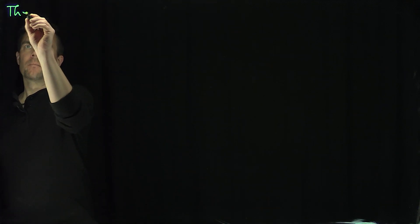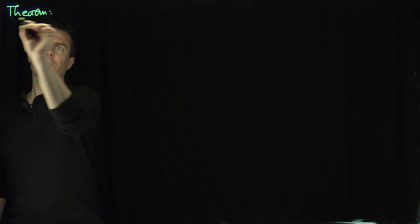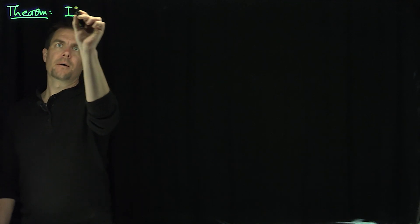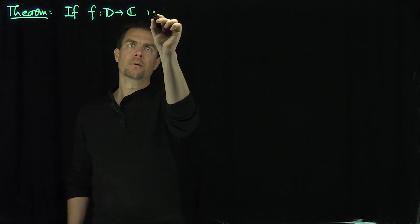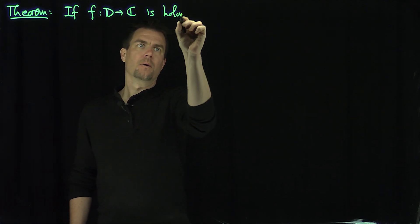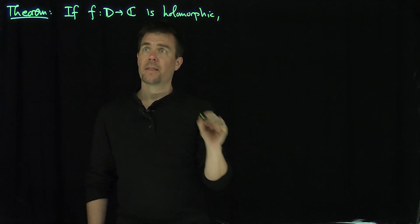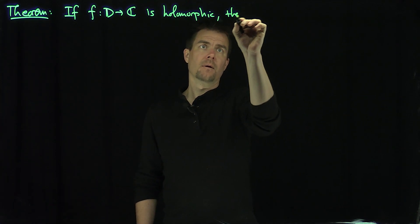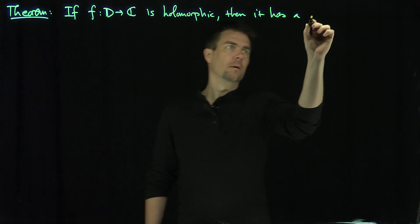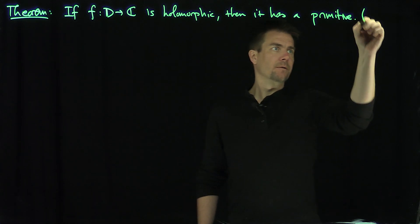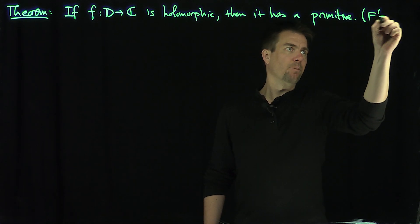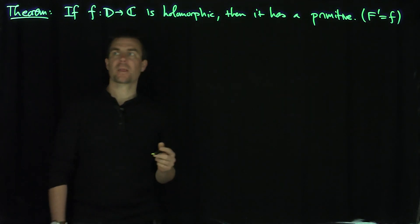Hello, students. In this video, we'll prove that a holomorphic function defined on the unit disc has a primitive. So here's our theorem: given that F maps the unit disc into C and is holomorphic, then it has a primitive. In other words, there's a function F such that F prime is equal to F.